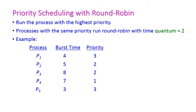Next, let us see another method — the combination of priority scheduling with round robin. Here, first run the process with the highest priority. If processes have the same priority, then we run those processes using the round robin scheduling algorithm with a given time quantum. We can take the same problem to solve using priority scheduling and round robin scheduling.